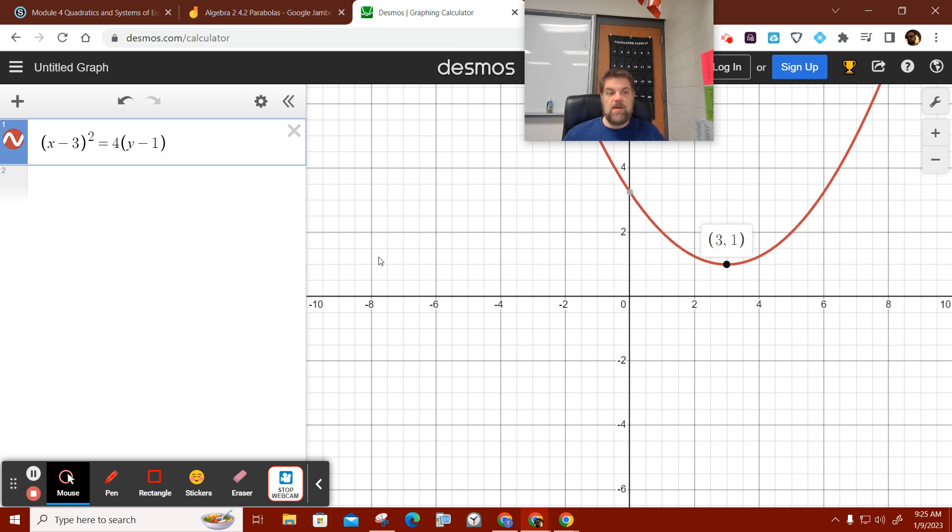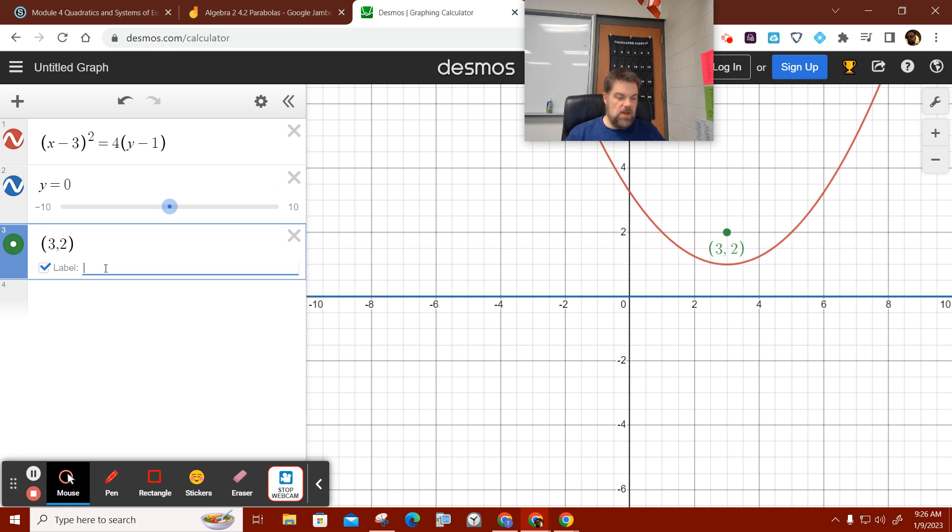By the way, this is the vertex three comma one. We could also plot Y equals zero. I'm going to change the color of that. It's the blue line. And then lastly, we can plot the point of the focus, which is three comma two. And we'll give that a label. We'll call this the focus. And then we can also plot the vertex three comma one, and we'll call that vertex.